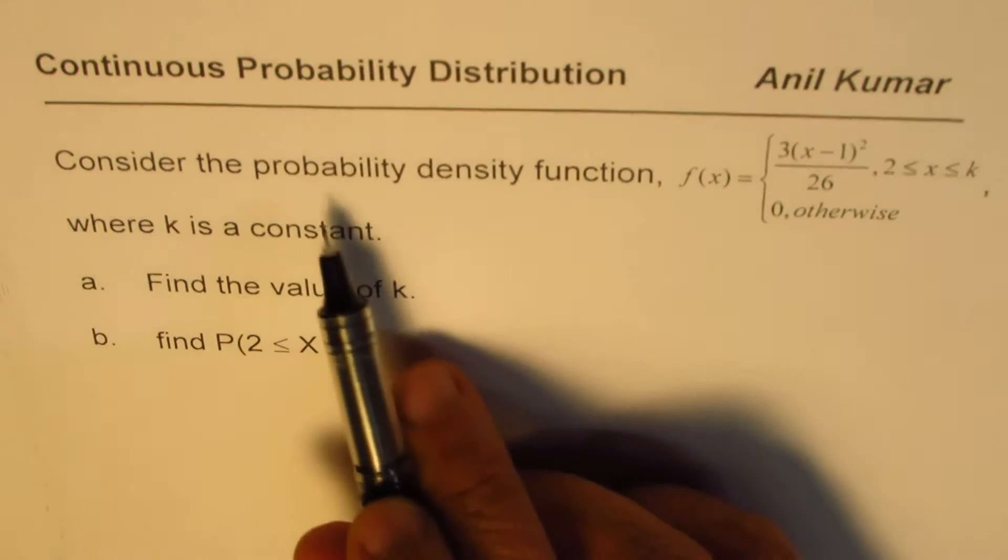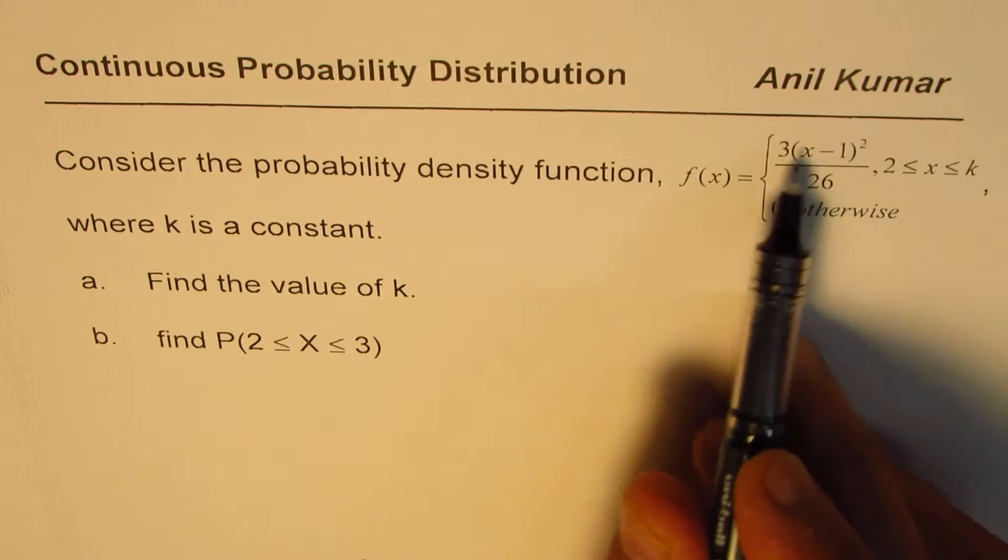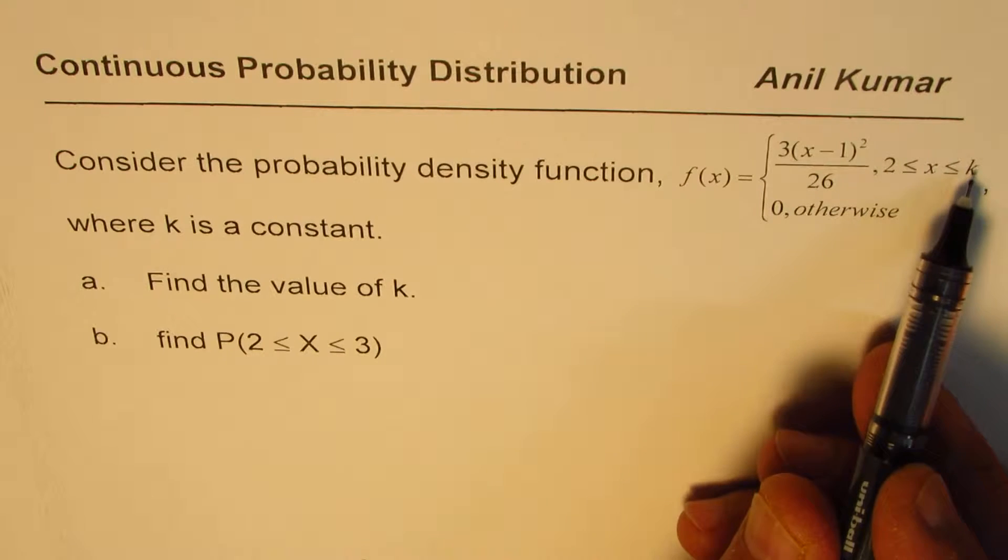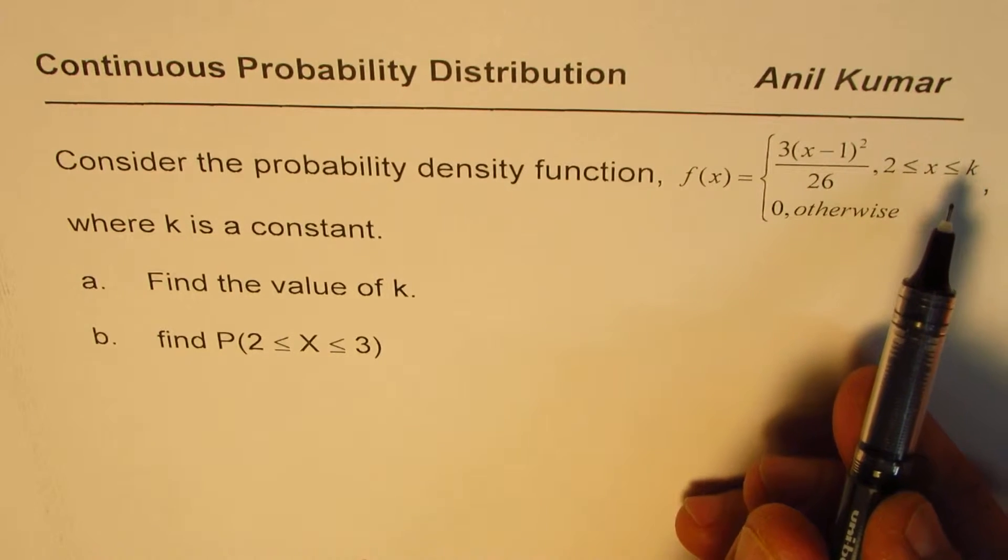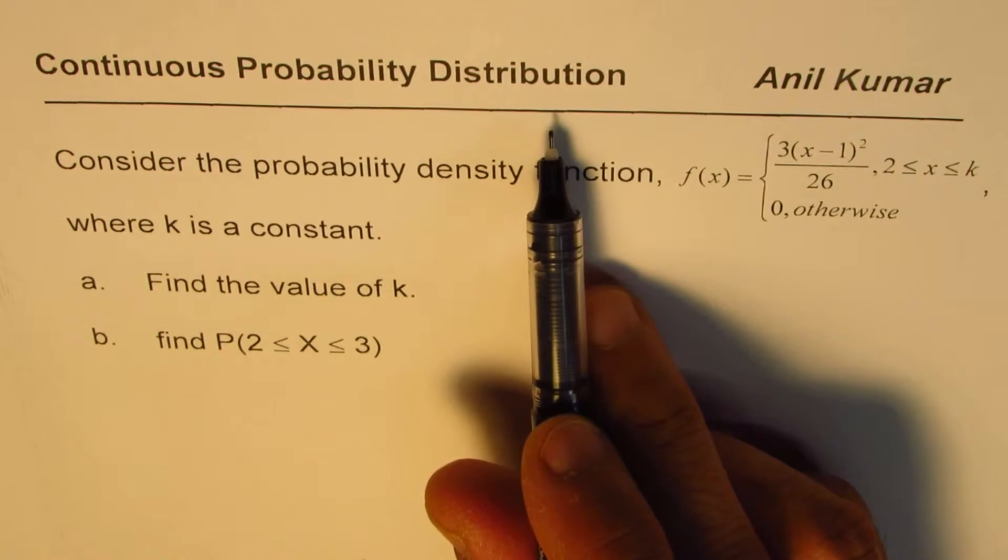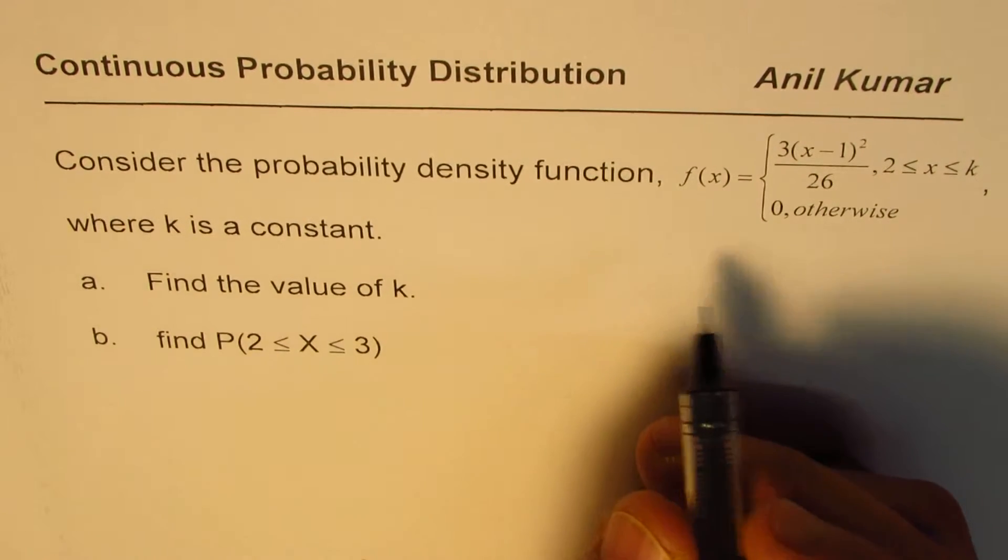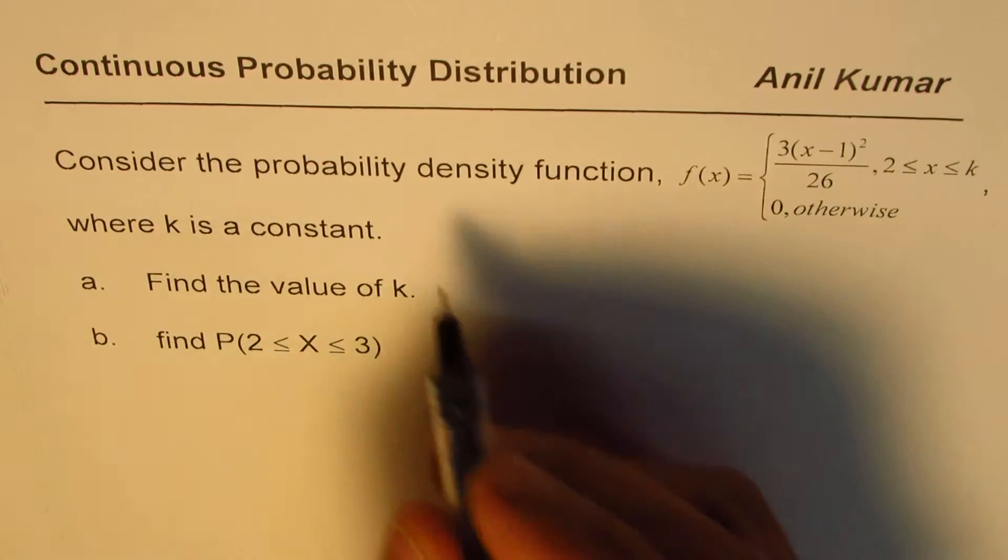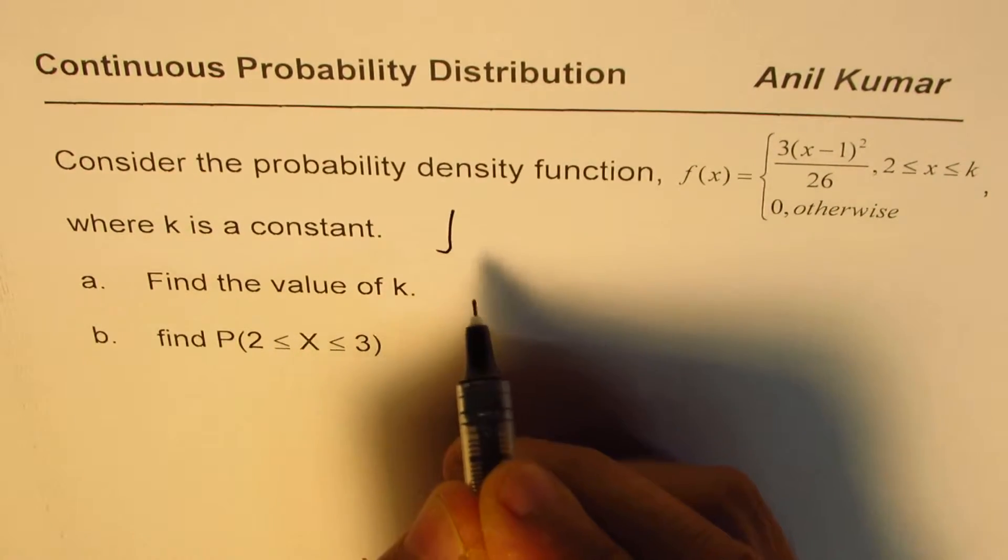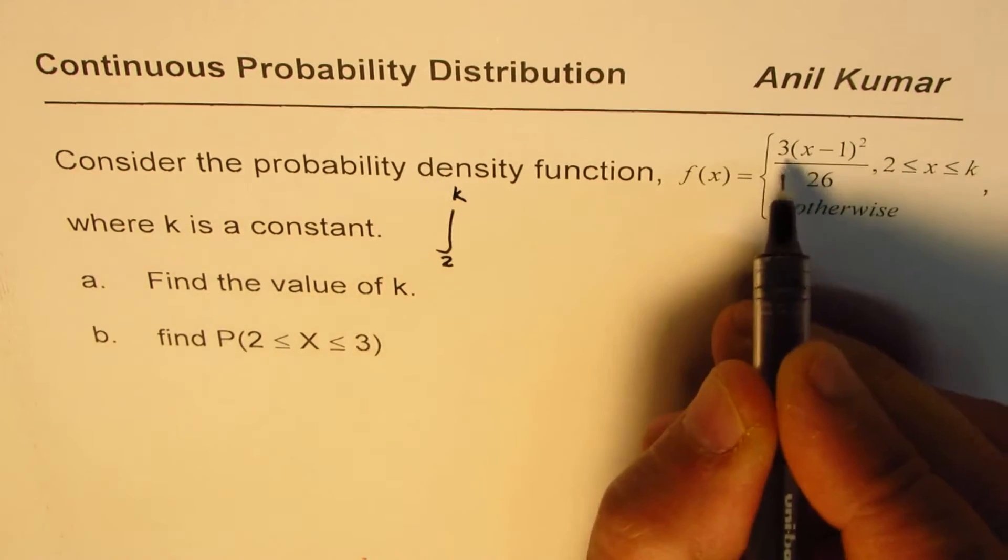When we say that the probability density function is this, that means that the sum of area under this curve from 2 to k should be equal to 1. So that's the base for us. And for a continuous probability distribution, how do we find the sum? We do the integration on the whole area.